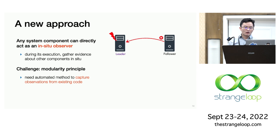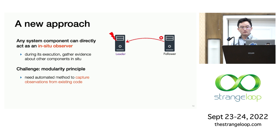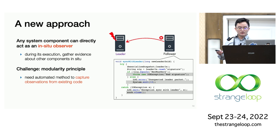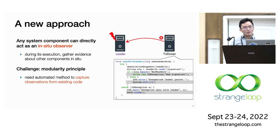Based on this insight, we propose a new approach to failure detection by allowing any component in a large system to participate and act as an in-situ observer — meaning that during their normal execution, we gather evidences about other components. The challenge here is that because of the modularity principle, a component may not really have the incentives to report errors about other components. Indeed, if we look at related code in the ZooKeeper follower that did observe the failure, we can see it has a lot of error handling code, but those errors are not really reported elsewhere. To avoid rewriting those requesters' code, we need some automated methods to capture evidences from this existing code.